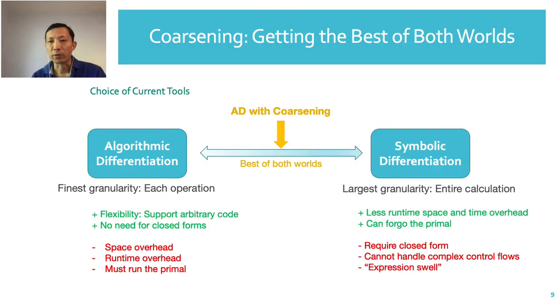But symbolic differentiation requires the computation to be expressed in closed form, which is difficult to do when there are complicated control flows in the program. As a result, the slower method algorithmic differentiation still remains the popular choice.